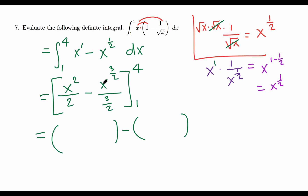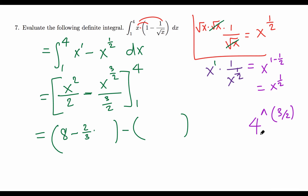Replacing x with 4: 4 squared is 16, divided by 2 gives 8. Then minus (2/3) times 4 raised to 3/2. To compute 4^(3/2): 4 is 2 squared, so 4^(3/2) = 2³ = 8. So the upper limit gives 8 minus (2/3)(8).